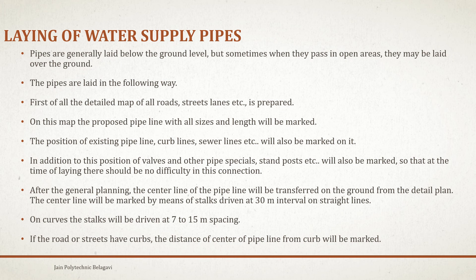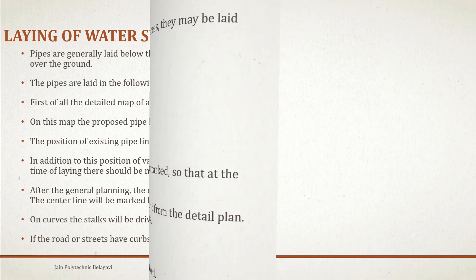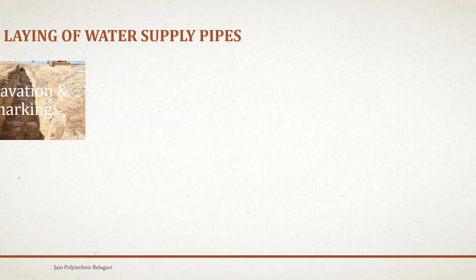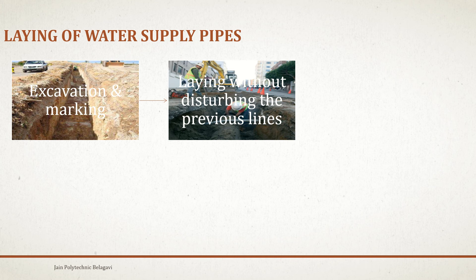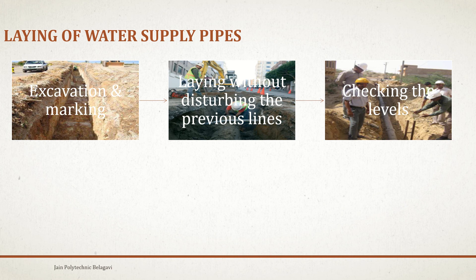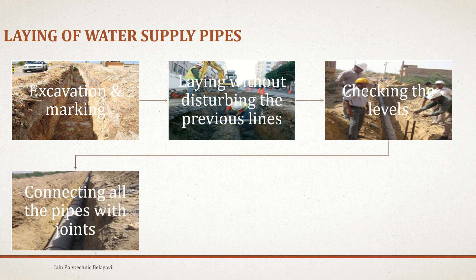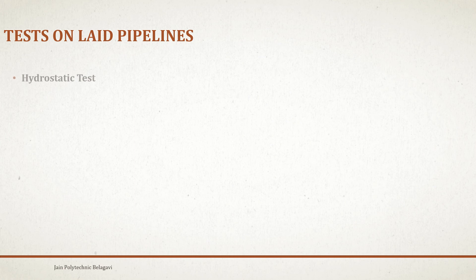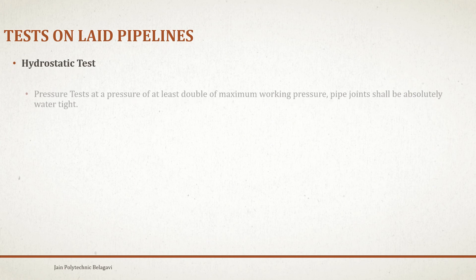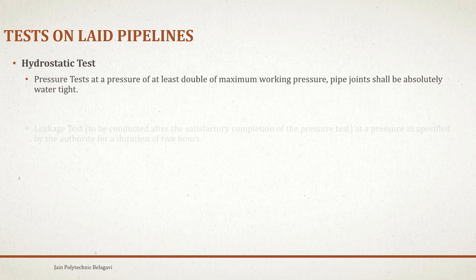The distance of the center of the pipeline from the curb will be marked. Next steps are: first, excavating and marking the center lines; next, laying without disturbing the previous lines; next, checking the valves; next, connecting all the pipes with joints; and lastly, testing the laid pipelines.